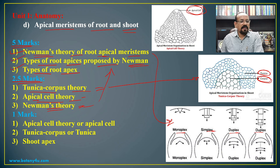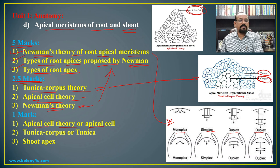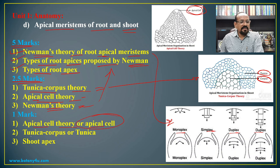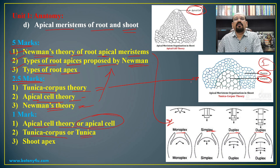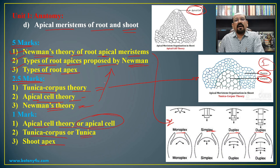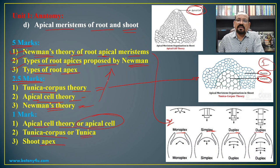For 2.5 marks, there is the tunica-corpus theory: outer few layers are the tunica, and the central part is the corpus. Tunica is responsible for formation of outer tissues and corpus for the central zone. Then the apical cell theory: in some lower plants, a single apical cell cuts in all directions forming all tissue types. Shoot apex is the terminal meristematic part involved in formation of ground tissue and the stellar region.